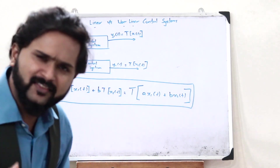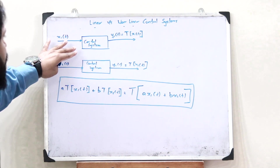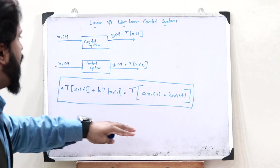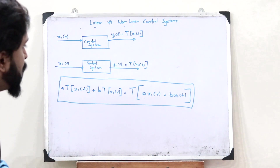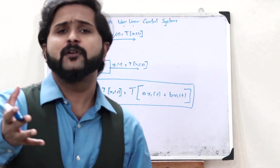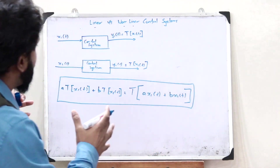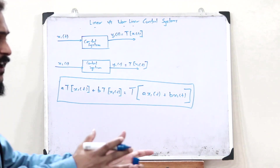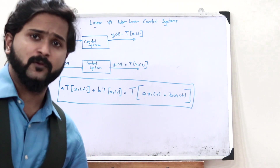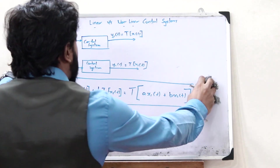As simple as that — there is nothing more to it. All we have to do is check if a particular control system obeys the principle of superposition. If it does, that control system is linear; if not, it is non-linear. Now let us see a few examples. The questions that can be asked from this section are: check if this particular control system is a linear or a non-linear control system.